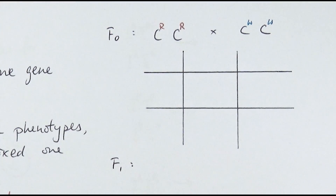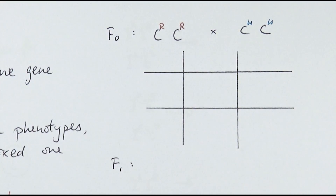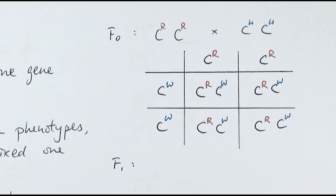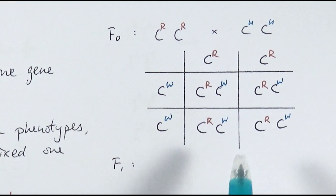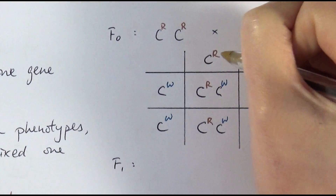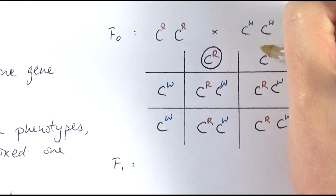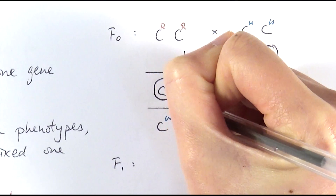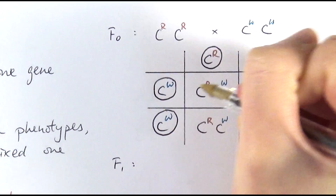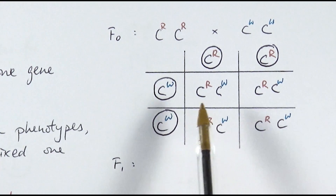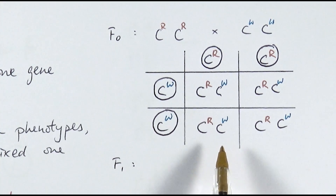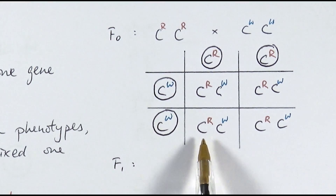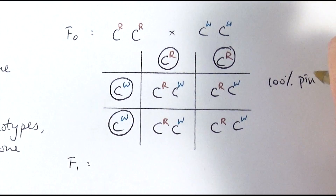Let's do an example. If the first generation cross has a red flower crossing with a white flower, using a Punnett square to predict the outcomes — similar to a homozygous cross except both alleles are dominant — all of the offspring here would be co-dominant, showing the heterozygous combination. So it's 100% pink flowers. Make sure to put a circle or ring around the allele to clearly indicate it is a gamete.